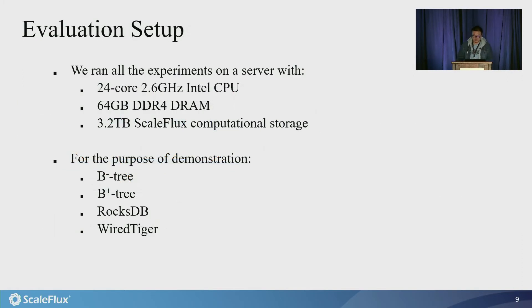So we ran all the experiments on a server with a 3.2 terabyte ScaleFlux computational storage. This drive carries out hardware-based Zlib compression on each 4KB block directly along the internal I/O path, being transparent to the host. For the purpose of demonstration, we implemented a B+ tree referred to as B-minus tree that incorporates our proposed three simple design techniques. To facilitate the incorporation, we also implemented a baseline B+ tree that uses conventional page shadowing. Moreover, we also considered RocksDB and WiredTiger as representatives of LSM tree and normal B+ tree.